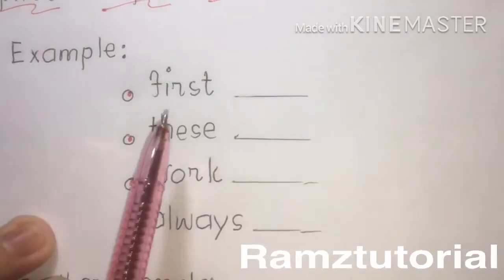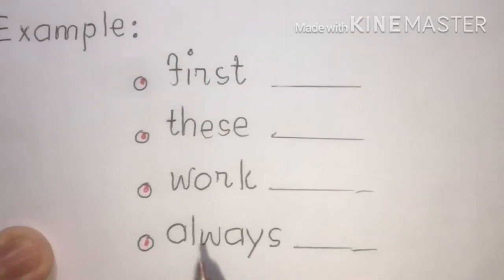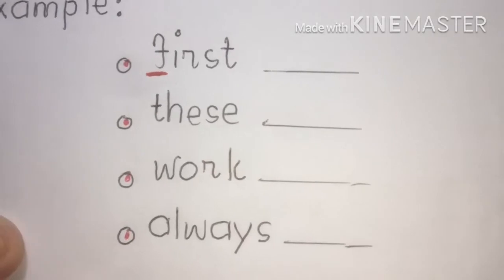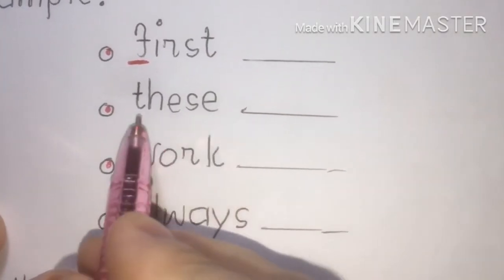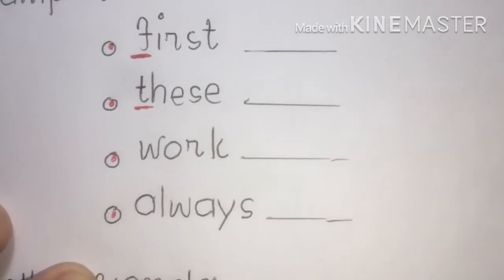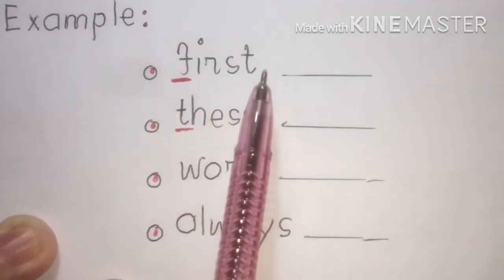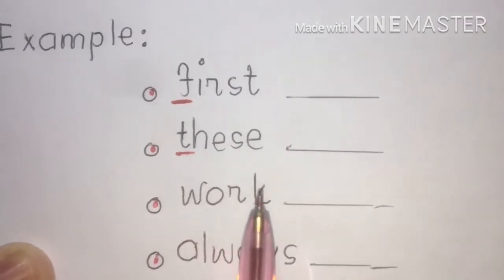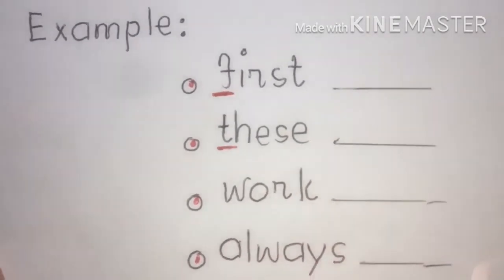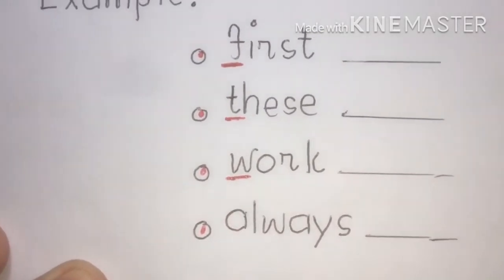Let's start with our example. The easiest technique is to underline the initial sound of each word. The first word's initial letter is F. The second word 'this' — I'm going to underline T. When you underline the first or initial sound of each word, you can easily arrange the words by applying alphabetical order.